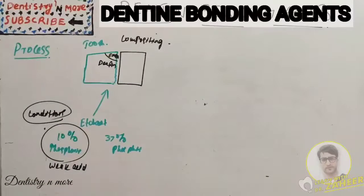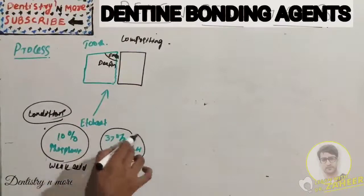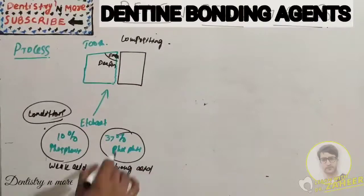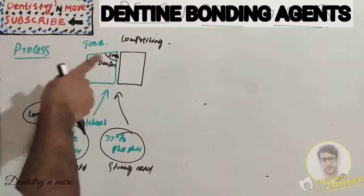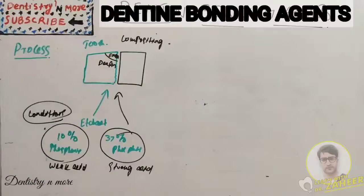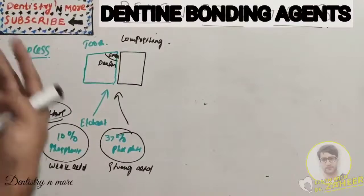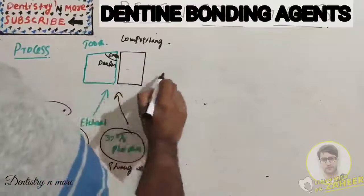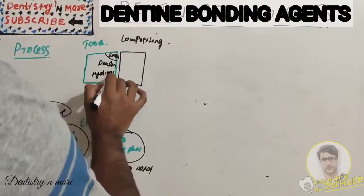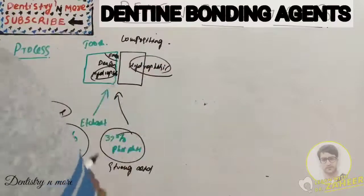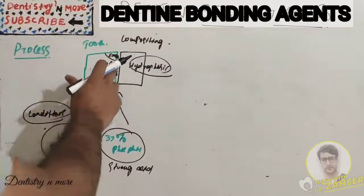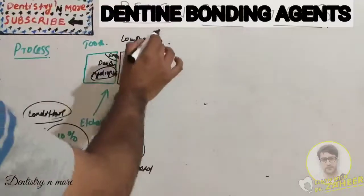If we apply 37% phosphoric acid, which is a strong acid, it causes demineralization of enamel but almost destroys the micro-structure of dentine. In both cases there is a problem - composite will not bond properly to the tooth structure. The second problem is dentin is hydrophilic - having more water content - while the composite resin is hydrophobic. Getting good bonding between hydrophilic dentin and hydrophobic composite is very difficult, which is why we apply a primer.